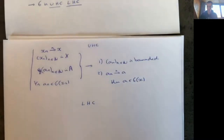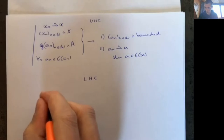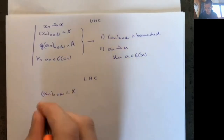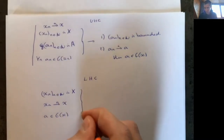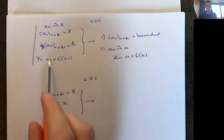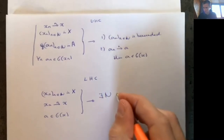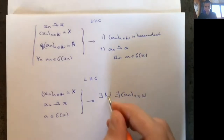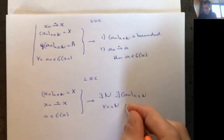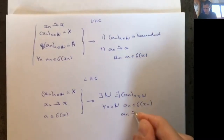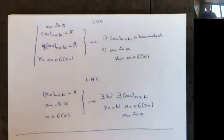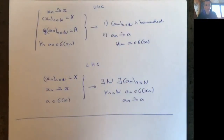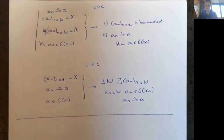Lower hemicontinuity is somehow the reverse. Again you have a sequence x_n in X converging to some limiting x. Instead of a sequence of a's, now I have a limiting a in g(x). Lower hemicontinuity tells you that there exists a sequence a_n, starting from some n onwards, such that for all n greater or equal to that n, a_n is in g(x_n), and this a_n sequence converges to the limiting a. For more details on lower and upper hemicontinuity, there is also a lecture video in the Math S400 course.